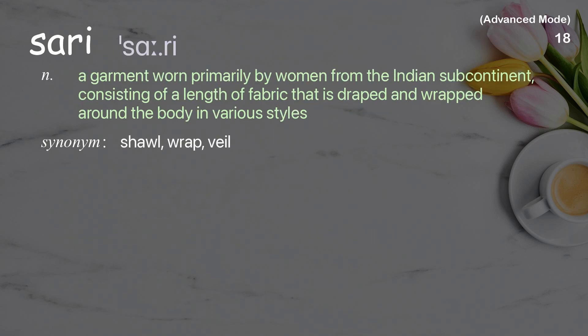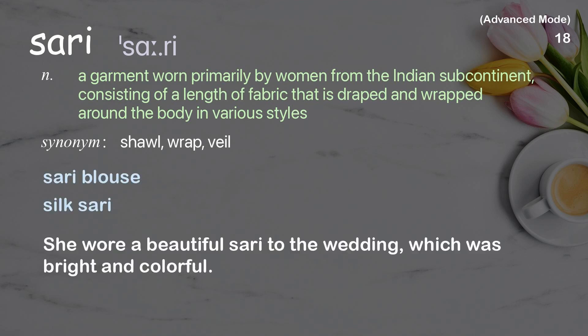Sari: a garment worn primarily by women from the Indian subcontinent, consisting of a length of fabric that is draped and wrapped around the body in various styles. Examples: sari blouse, silk sari. She wore a beautiful sari to the wedding, which was bright and colorful.